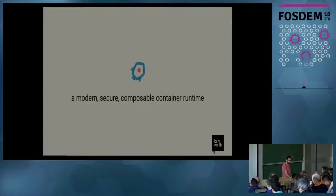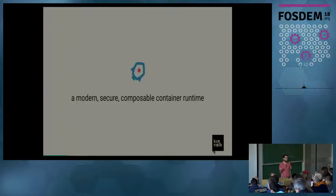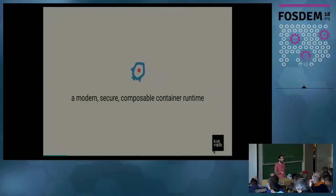Rocket is basically — that's the tagline — a modern, secure, composable container runtime. We say modern because we try to take advantage of the latest technologies in the Linux kernel. We say secure because we try to make it secure by default — everything is locked down, and if you want to disable stuff, you have to do it explicitly. And composable because we try to play nice with the rest of the system and reuse components that are already there.